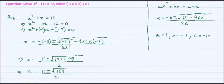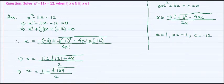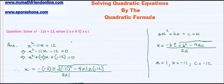So we have solved the quadratic equation x squared minus 11x equal to 12 using the quadratic formula, which is x equal to minus b plus or minus under root b squared minus 4ac by 2a, where b is the coefficient of x, a is the coefficient of x squared, and c is the constant. This brings us to the end of our session. Thank you for listening.